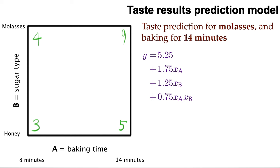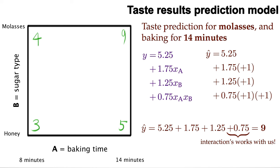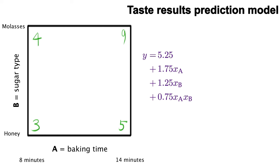Try it again, but using baking times of 14 minutes, so that xA is a positive one. So now our prediction is 5.25 plus an additional 1.75 for baking time, plus 1.25 for using molasses, and now the interaction works in our favour by adding 0.75 units for taste. This gets us a cumulative total of 9 units. Now this all may seem very messy, but it's well worth it, because what we get is a really good prediction model that accounts for the interactions in our system and the main effects.